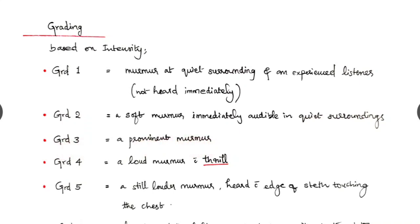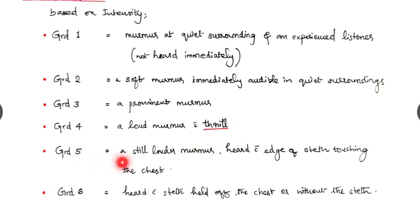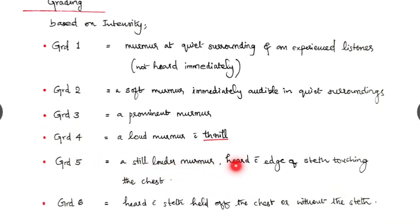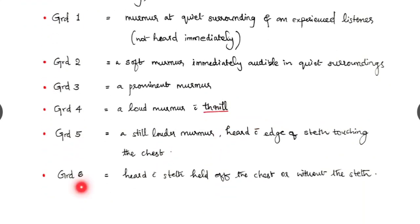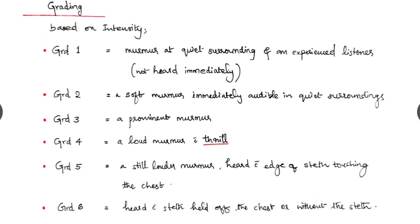And grade 4 is a loud murmur with thrill. If we are getting a thrill, it means it is of grade 4. Grade 5 is a still louder murmur heard with the edge of the stethoscope just touching the chest. Grade 6 means the murmur is heard with the stethoscope even if it is held off the chest, or it is heard even without a stethoscope. And this is the grading of murmur, and that we have to distinguish and write down.